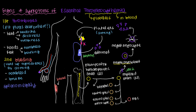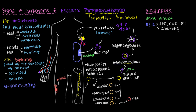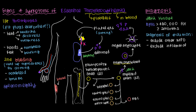To diagnose essential thrombocytemia, a slam-dunk finding is the presence of the JAK2 kinase mutation, suggesting a myeloproliferative disorder. More specifically, if the platelet count is greater than 450,000 for two or more months, that's pretty suggestive. ET is also a diagnosis of exclusion, meaning you must rule out other myeloproliferative disorders and causes of inflammation before concluding a patient has ET.